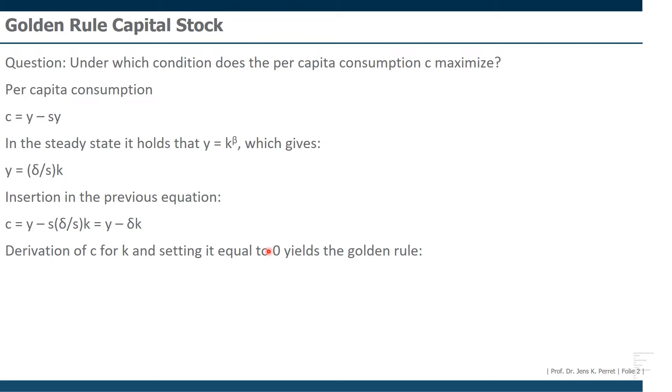I will get the so-called golden rule. The golden rule here is per capita consumption derived for k gives per capita GDP, per capita income derived for k minus delta, minus the depreciation rate.